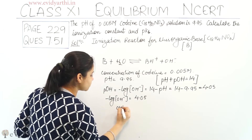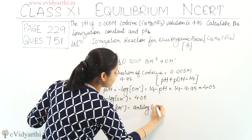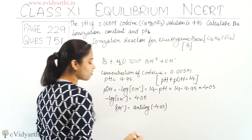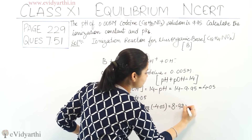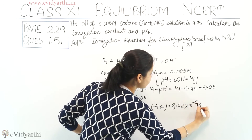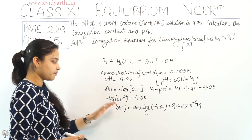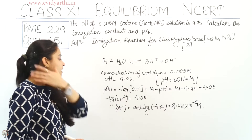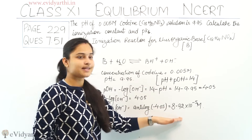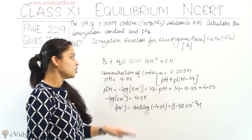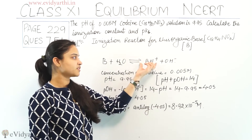The OH⁻ concentration will be the antilog of minus 4.05. When you calculate this, the answer comes out to be 8.92 into 10 raise to power minus 5 molar. So we derived the pOH from pH, and then from pOH we calculated the hydroxide ion concentration. The antilog of minus 4.05 gives us 8.92 into 10 raise to power minus 5 molar. So the hydroxide ion concentration is 8.92 into 10 raise to power minus 5 molar, and same is the concentration of BH⁺ ion.